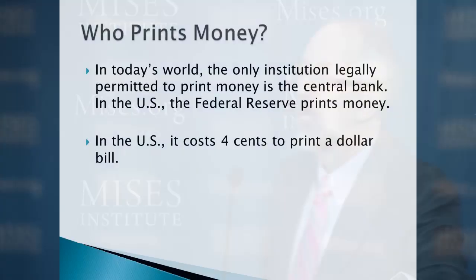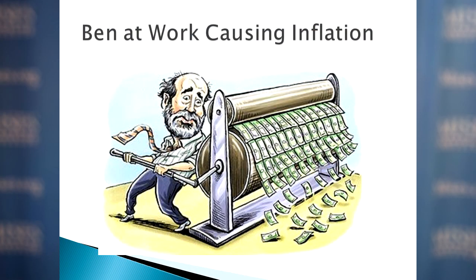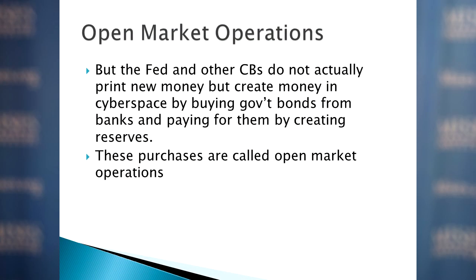So in today's world, who prints money? The only institution legally permitted to print money is the central bank — in the U.S., that's the Federal Reserve. It costs about four cents to print a dollar bill, whether it's a hundred-dollar bill, a fifty-dollar bill, or a twenty-dollar bill. But that's not really how the Fed increases the money supply. They don't really print new money — they create it in cyberspace by buying government bonds and paying for them by creating reserves in the banks' accounts at the Fed. These are called open market operations.